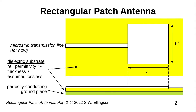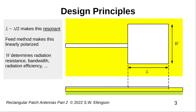Here's a reminder of what we're talking about. The antenna consists of a rectangular patch implemented on a printed circuit board. The printed circuit board consists of the patch on the top layer, a dielectric substrate, and a ground plane. The dielectric is characterized by a relative permittivity epsilon sub r, and has thickness t, which is tiny relative to a wavelength. We'll assume the dielectric is lossless. We'll feed the patch using a microstrip transmission line connected to the center of one side of the patch. The dimensions capital L and capital W are shown in the figure.